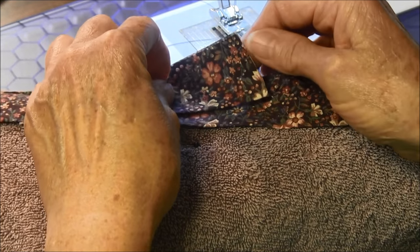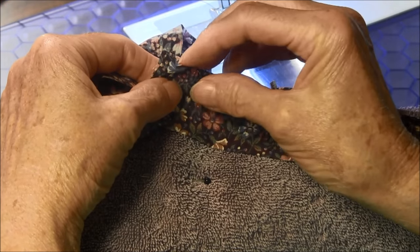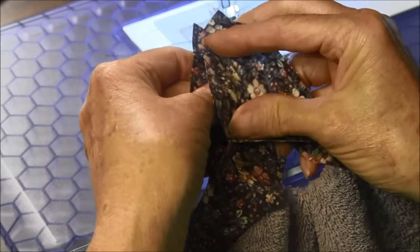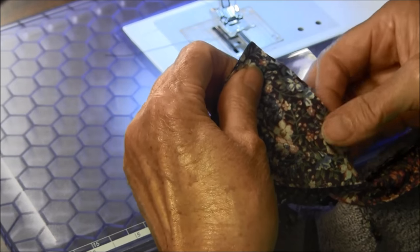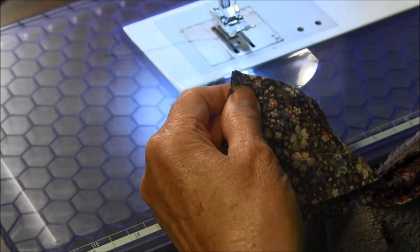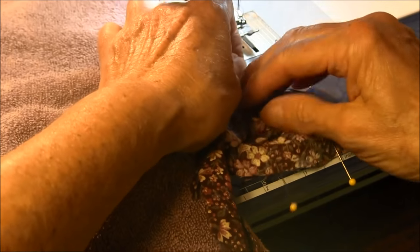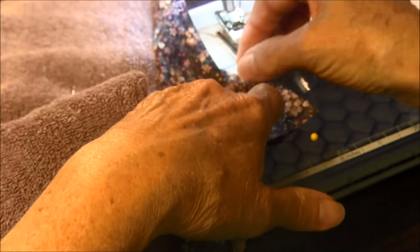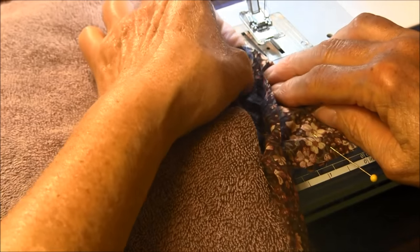Now we're going to open them up and put the right sides together like so. We're going to pin it. Then, you're going to sew from this corner up here to the corner down here to join them together. I should have probably had it a little longer, but I'll be able to do it.